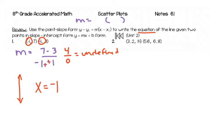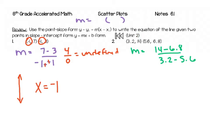Let's look at number 2. I've got two points, so again the first thing is to find the slope — y minus y over x minus x. It's important that you do the x's and y's in the same order. So if I do 14 minus 6.8, I have to do 3.2 minus 5.6. Doing the math: 7.2 divided by negative 2.4 comes out to be the integer negative 3.